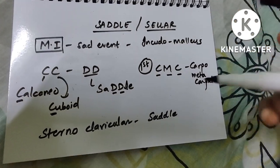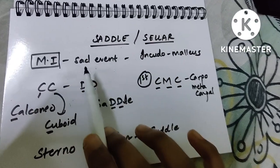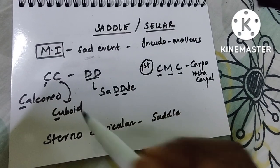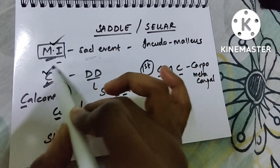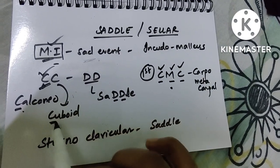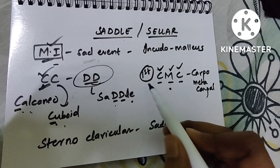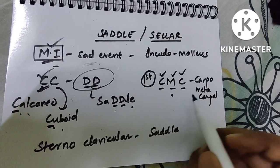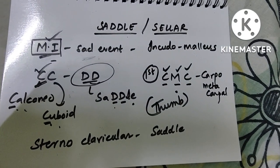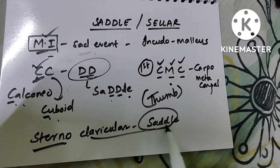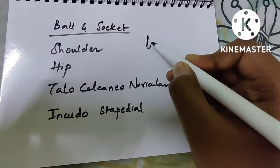Saddle joint is otherwise called sellar joint. MI is a sad event, so the incudomalleolar joint is saddle. For the mnemonic CMC — calcaneo-cuboid joint (CC = DD = saddle). The first carpometacarpal joint (thumb) is a saddle joint. The sternoclavicular joint is also a saddle joint.